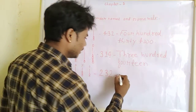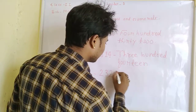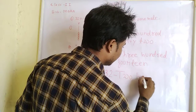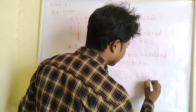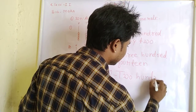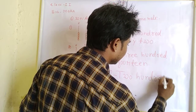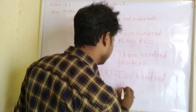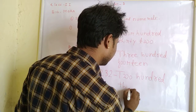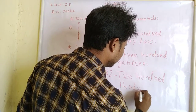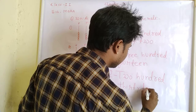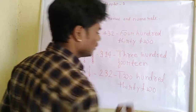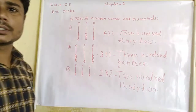Now write the number names. So, 232 — two hundred thirty-two. This is your answer.